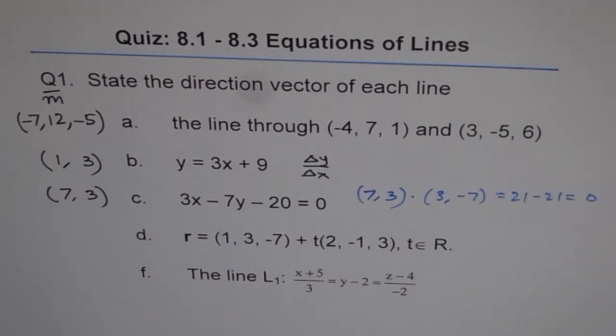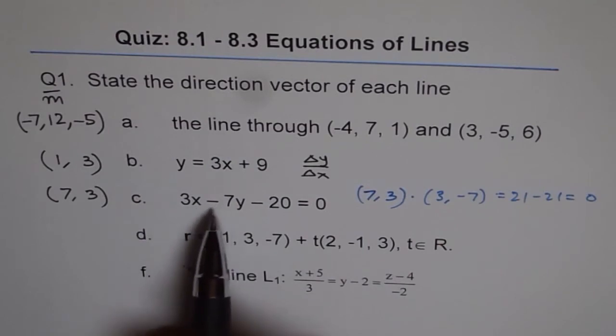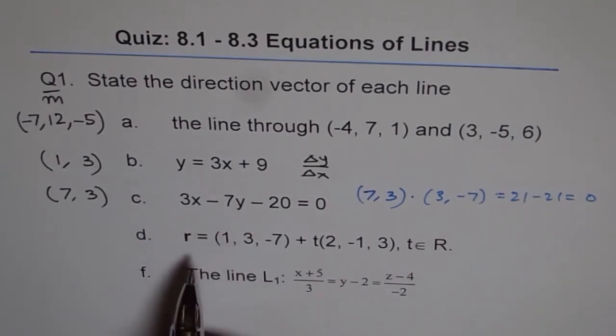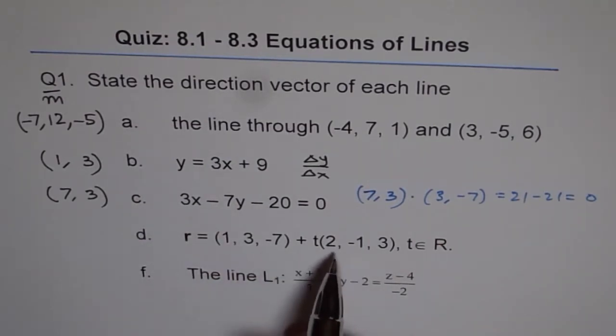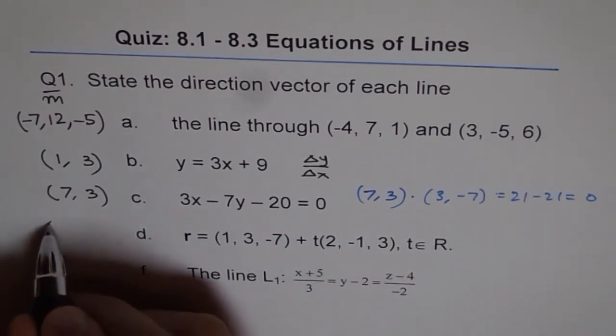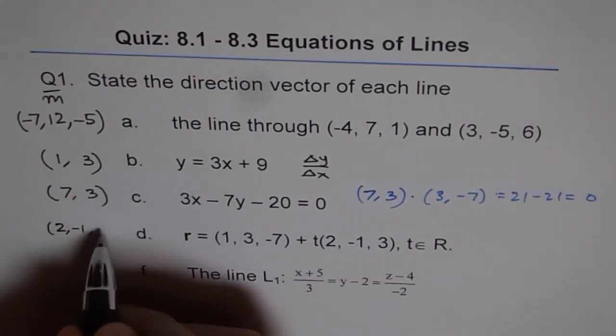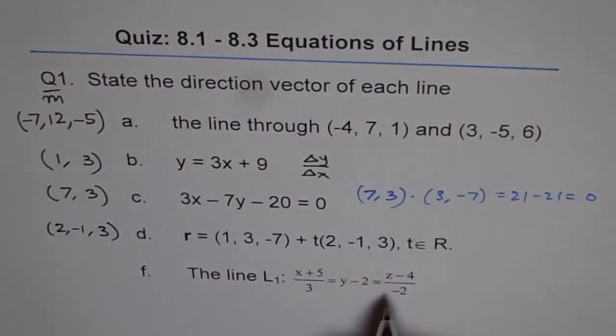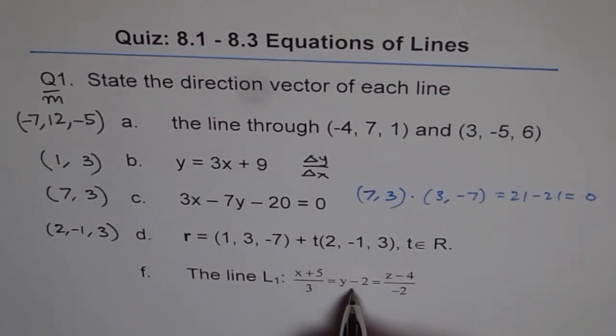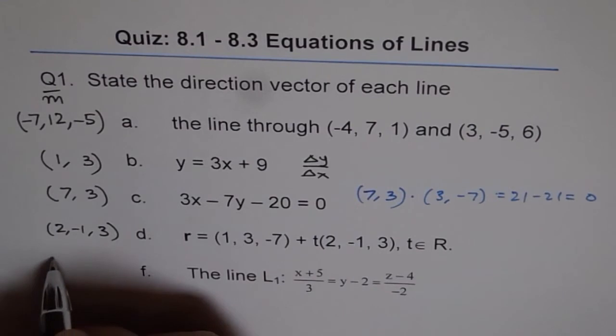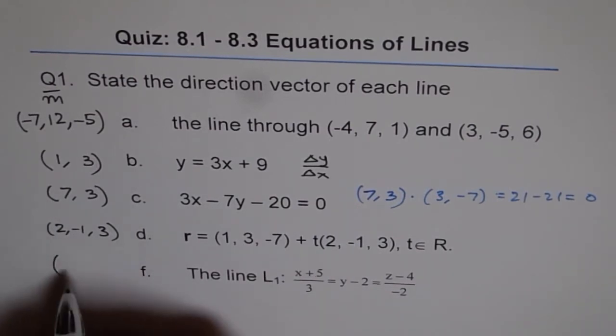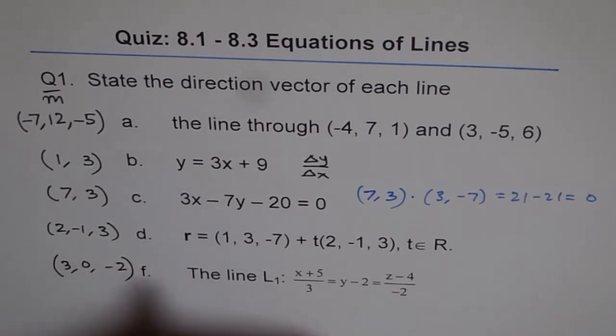Just flip it and change one of the signs. Now this is a vector equation, which gives you the direction vector straight away. So here it is 2, minus 1, and 3. And this one is giving you direction vector. So what do you think is the direction here? It is 0. So it is 3, 0, and minus 2.